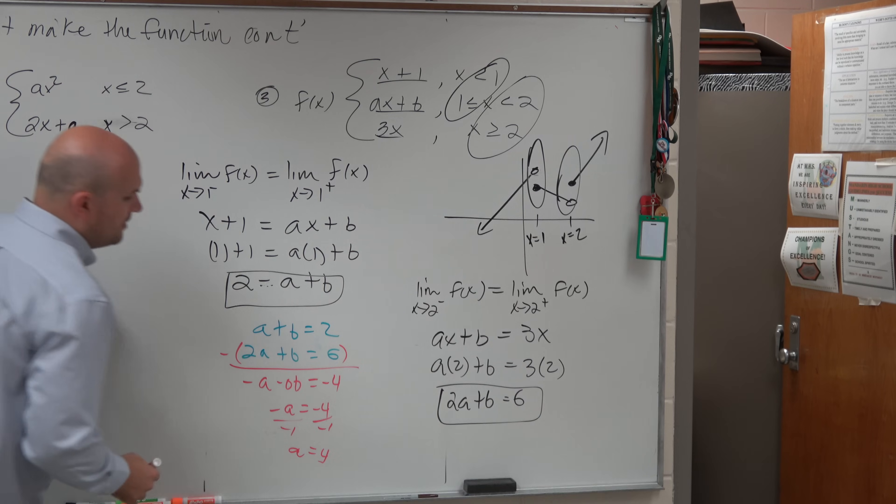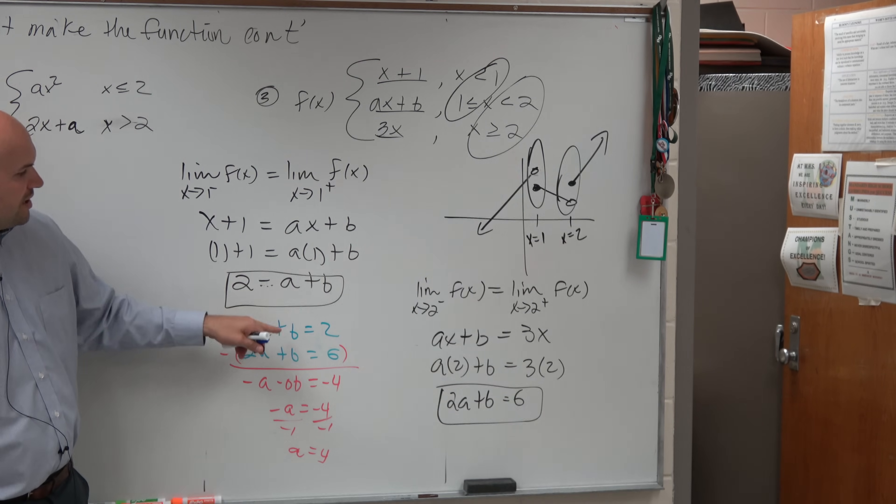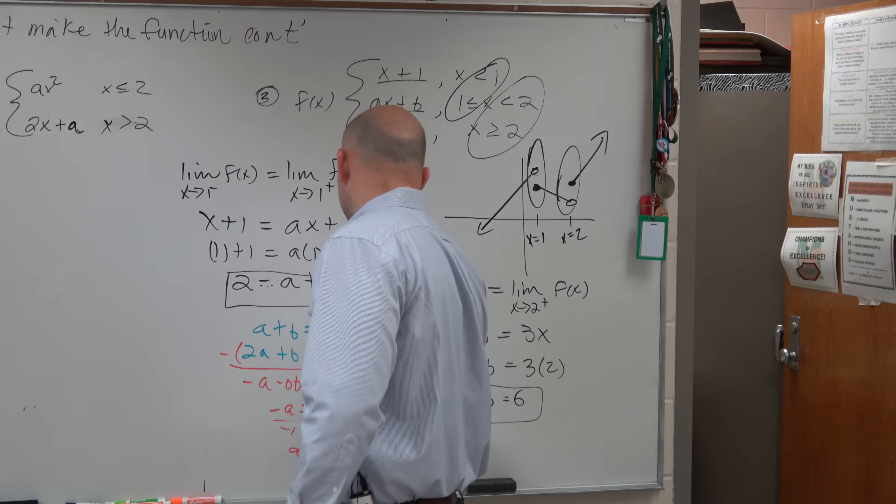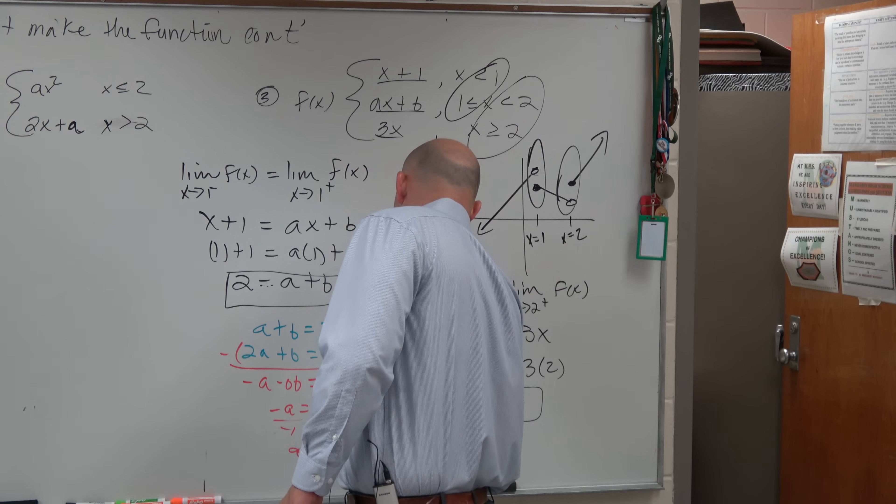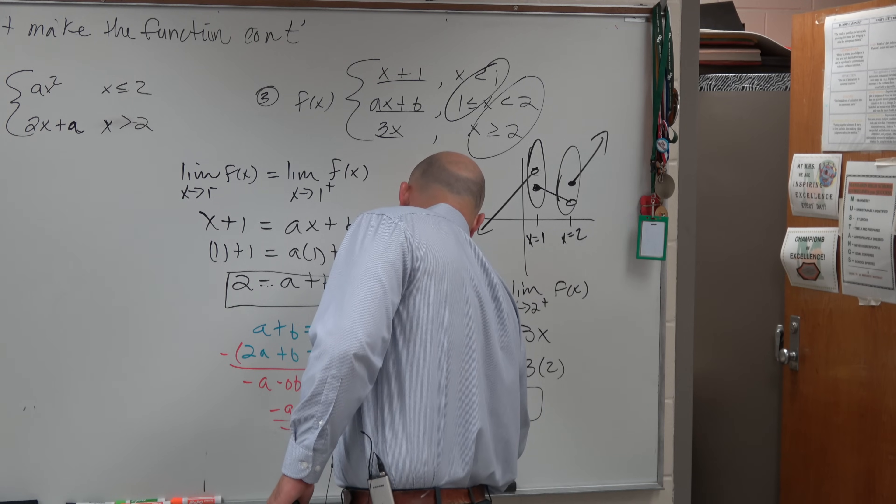And then now that I know a equals 4, to find out b, I just plug it into one of these other two equations. So let's plug it in here. Negative 4 plus b equals 2. Add 4, add 4, b is equal to 6. Was that the answer, negative 4 and 6?